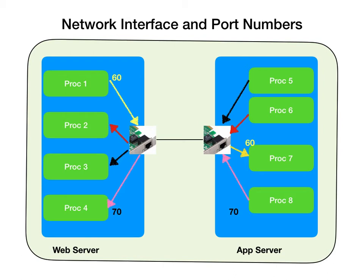Same thing the other way around — process 8 would specify port 70 to reach process 4 on the other side. When you're establishing security groups, you're going to have to specify these port numbers. Port numbers are very typical: for TCP communication it's 80, for HTTPS it's 443, and so on. You just need to know these numbers to establish communication between two systems.